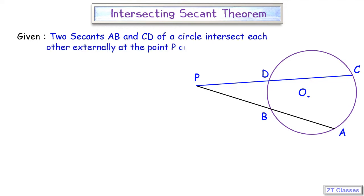They are intersecting at an external point P. Here we have to prove that the product of PA into PB will be equal to PC into PD. So we have to do some construction here.